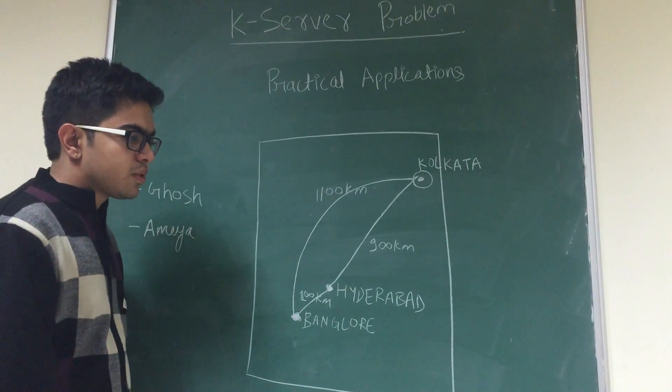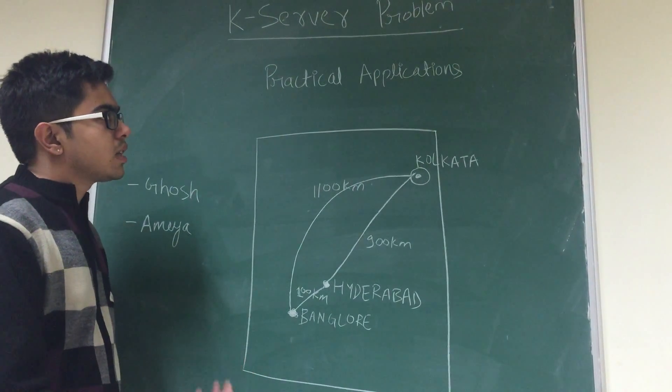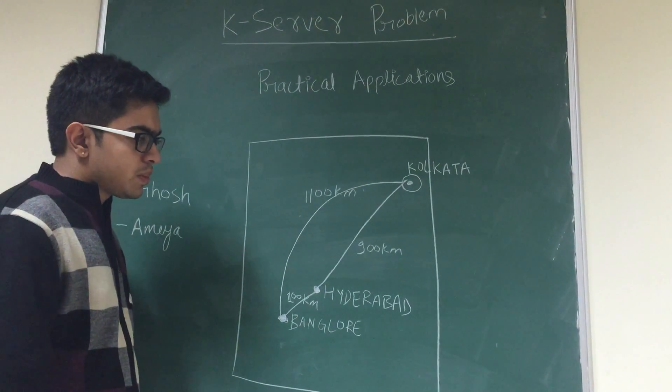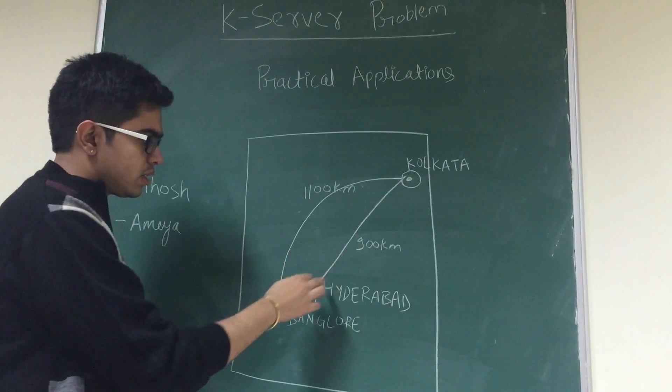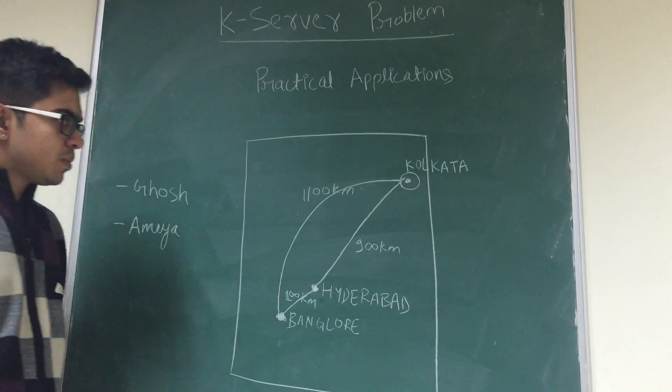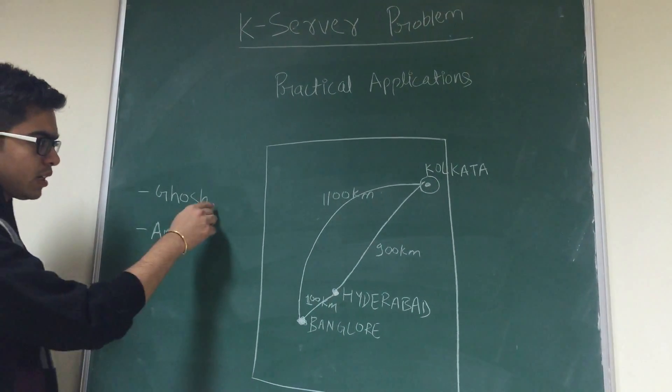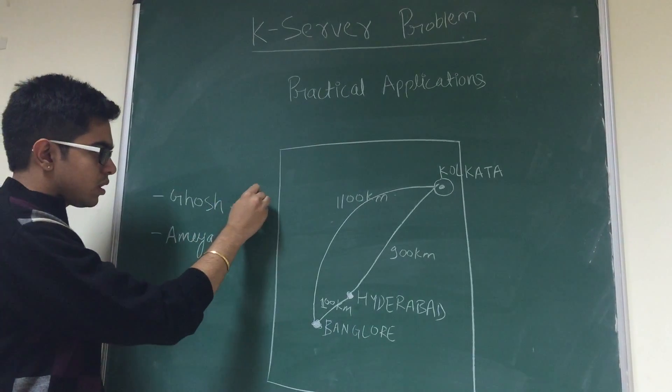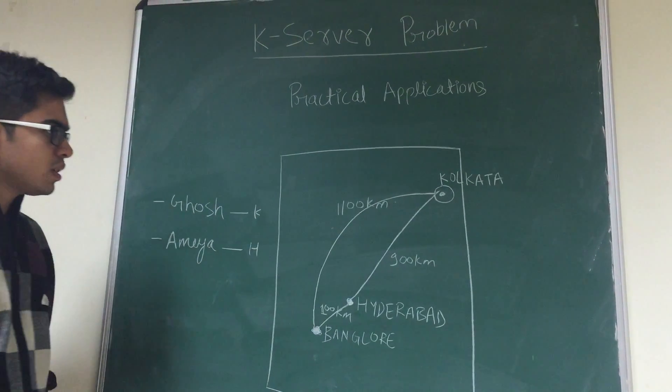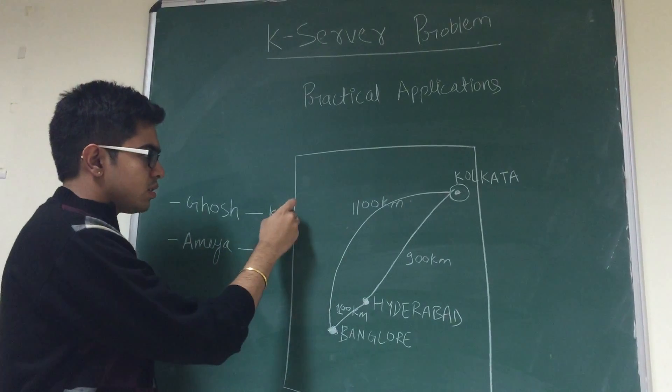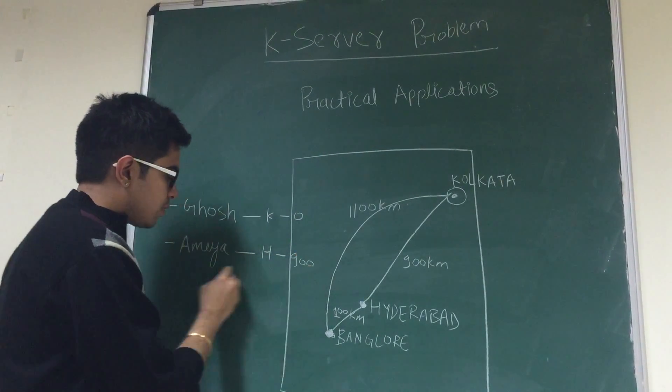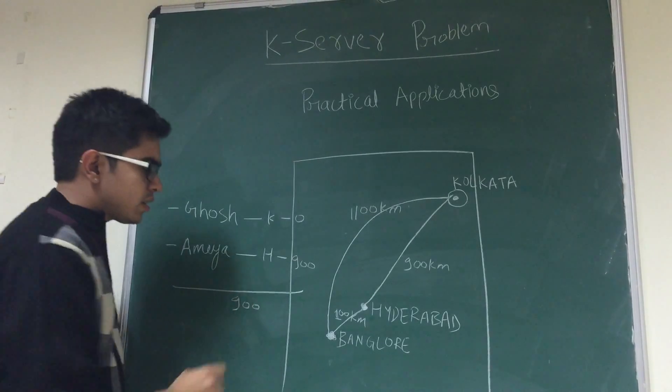So let us talk about one of the greedy approaches of solving the online K-Server problem. Let's say I'm getting a request per day in Kolkata and let's say I'm getting one request in Hyderabad daily. So what can be my possible solution? Let's say I assign Ghosh to Kolkata and I send Amya to Hyderabad. This way, the total distance travelled by my server will be 0 for this and 900 for this. And the total distance travelled will be 900.